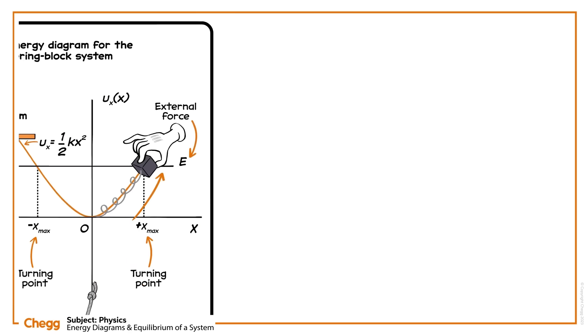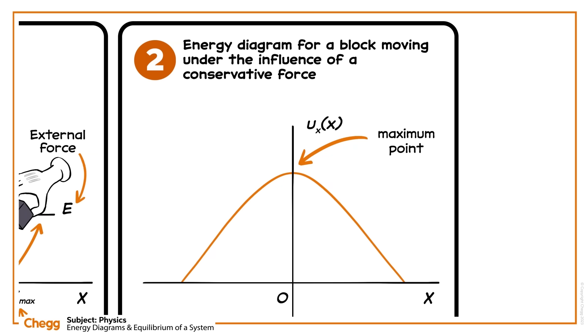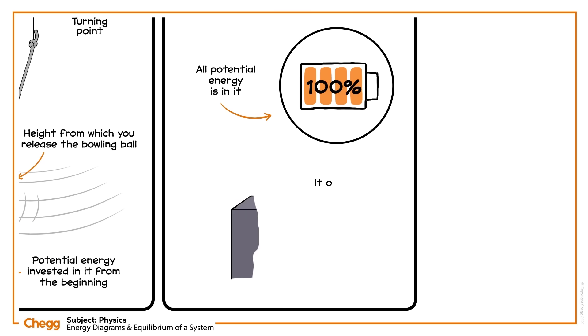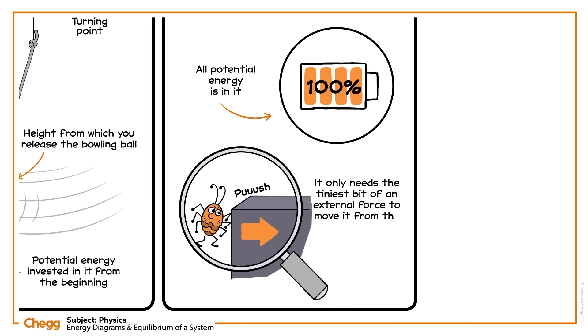Now consider an energy diagram for a block moving under the influence of a conservative force. When the equilibrium is at the maximum point, it has an unstable equilibrium because all the potential energy is in it. It only needs the tiniest bit of an external force to move it from the maximum point.